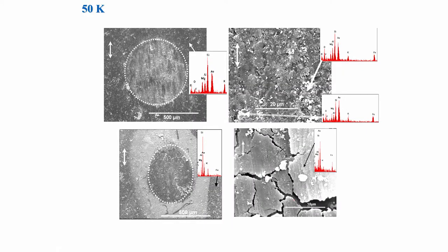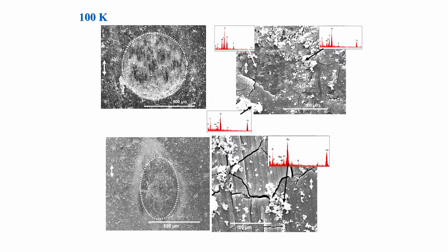At 50000 cycles, the worn surface shows very significant cracking with clear signatures of tribochemical wear — the tribochemical layer is cracked significantly and different parts are worn off. At 100000 cycles, wear debris particles of different contrast are visible, which can lead to three-body wear situations. Very deep cracks, mostly perpendicular to the fretting direction, cause extensive spalling of the tribo layer.